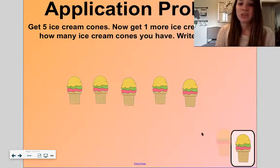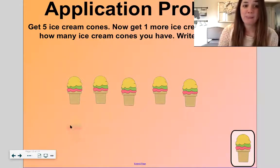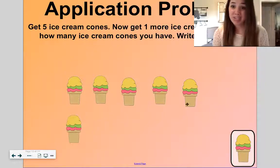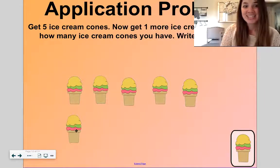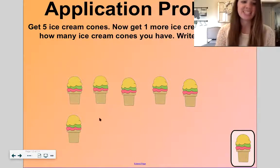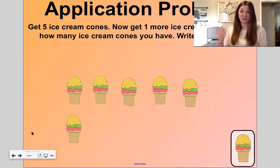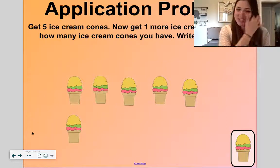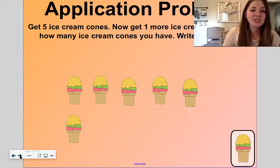Now let's count one more. Five on top. One more is six. Five and one makes six. Now we have six ice cream cones. Yummy, yummy, yummy. That is so delicious.